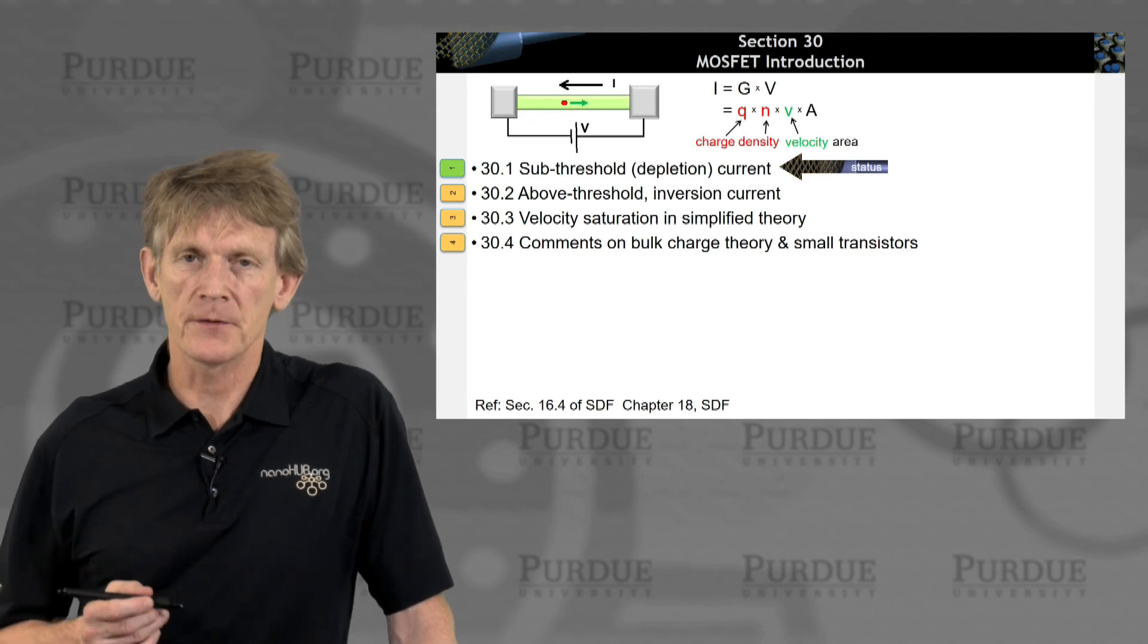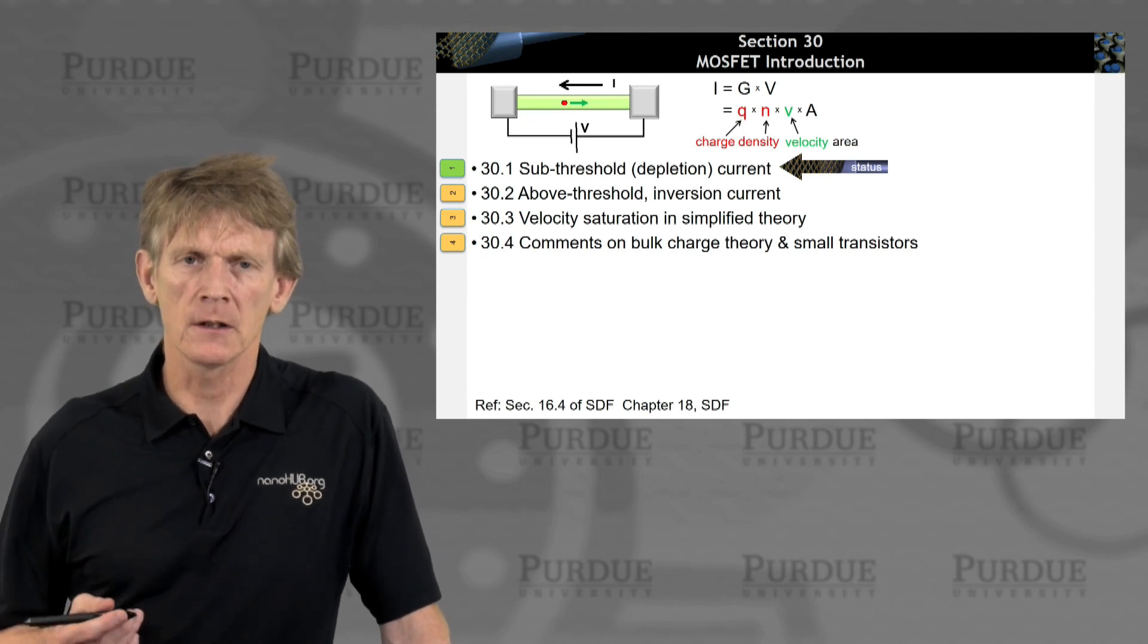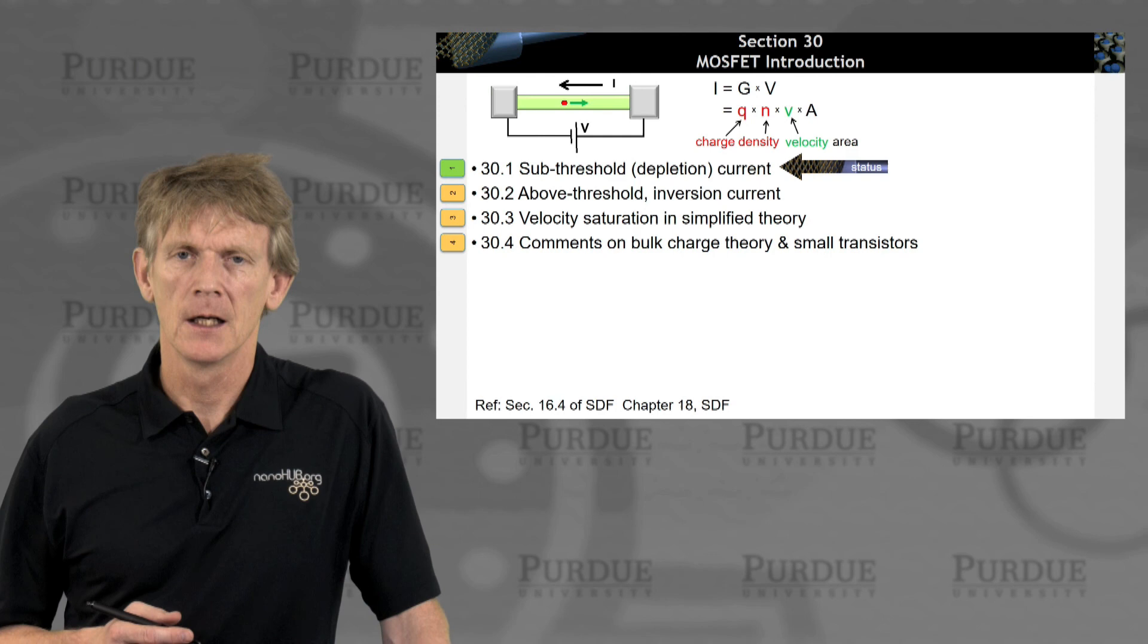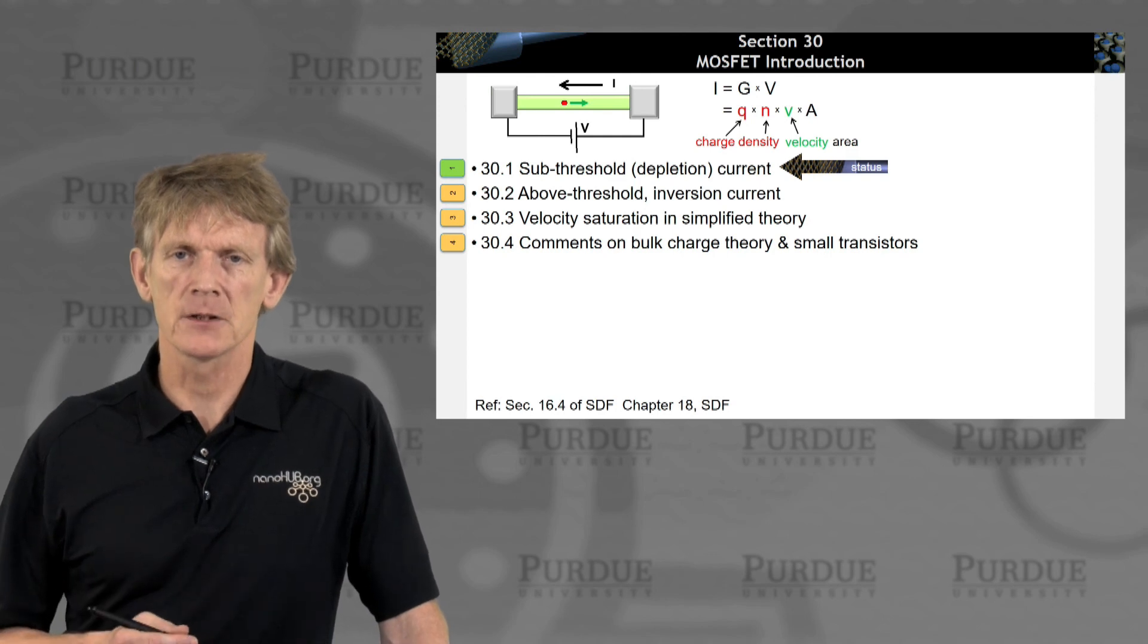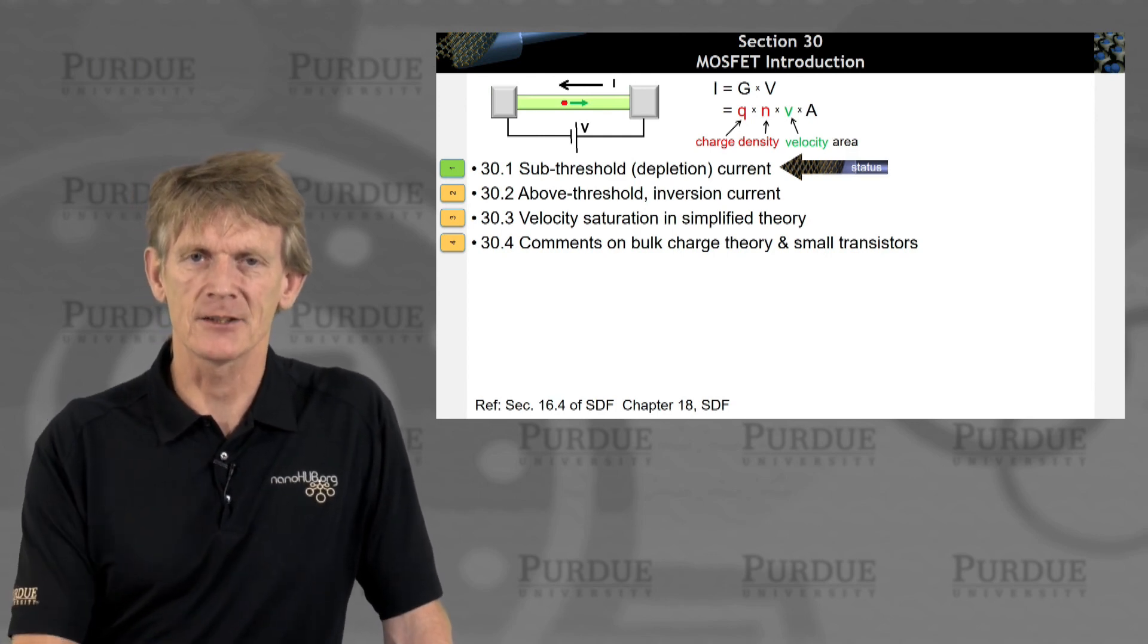All right. So, that was the sub-threshold behavior of the turn-on of a transistor. And next, we'll look at the above threshold on the inversion current. I'll see you at that section.